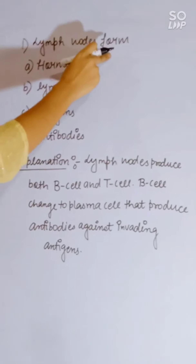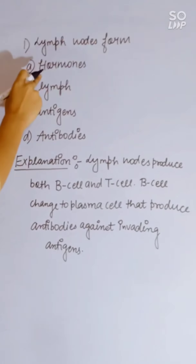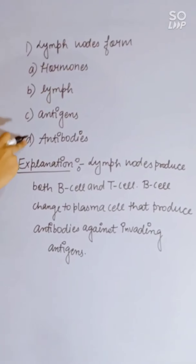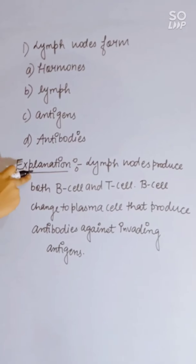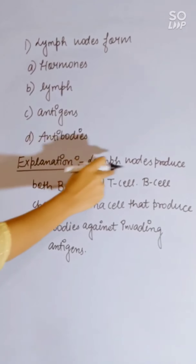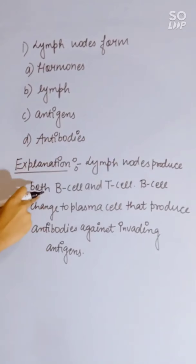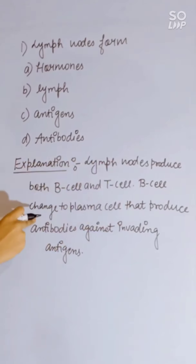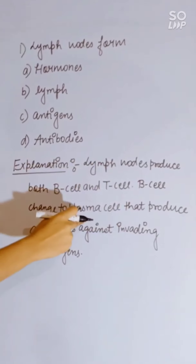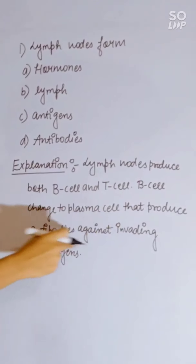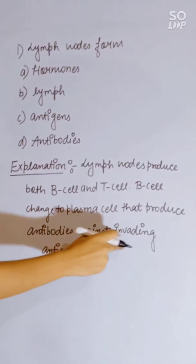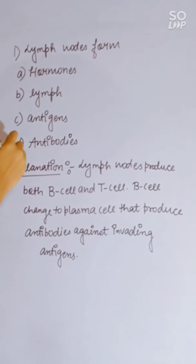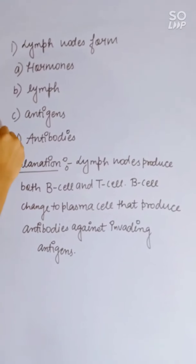What does the lymph node form? Options: hormone, lymph, antigen, or antibody. The lymph node produces both B and T cells. B cells change to plasma cells that produce antibodies against invading antigens. Correct answer is antibody.